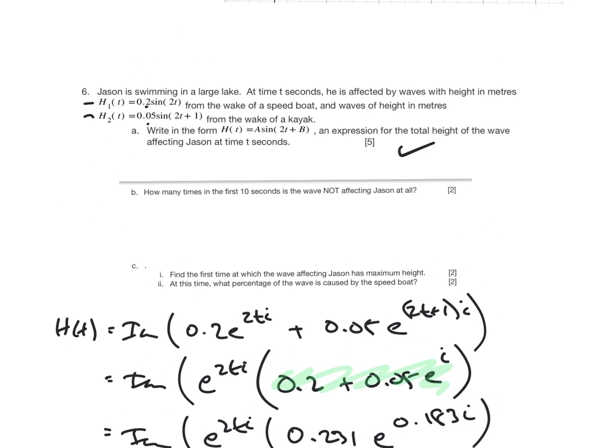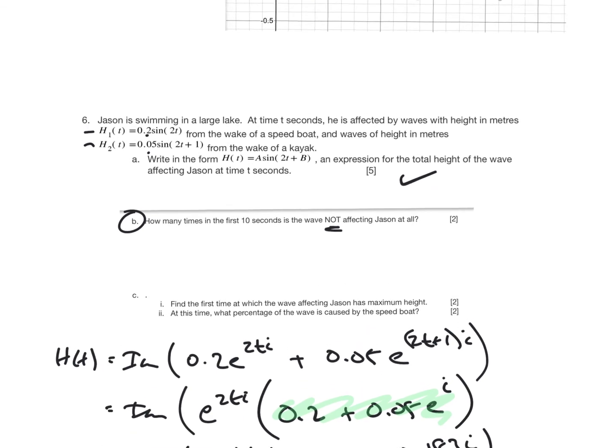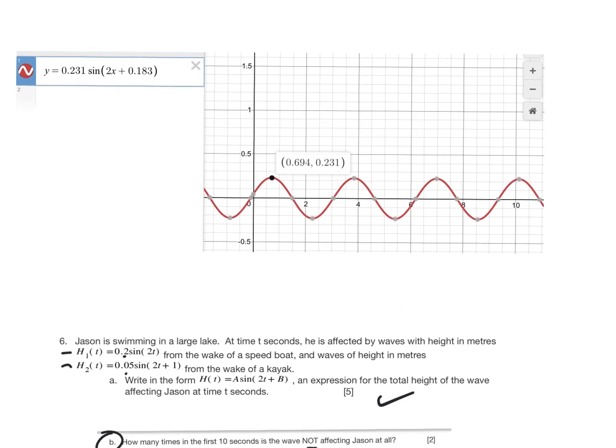What I want to go to B part says, how many times in the first 10 seconds is the wave not affecting Jason at all? Well, if I go to my graph, this is the graph. And so here's the first 10 seconds. At these points here is when it doesn't feel any waves at all. And so I've just circled them all.